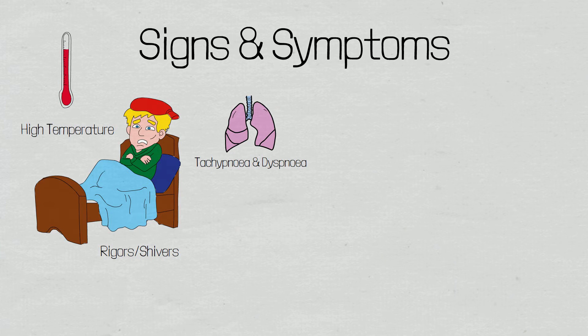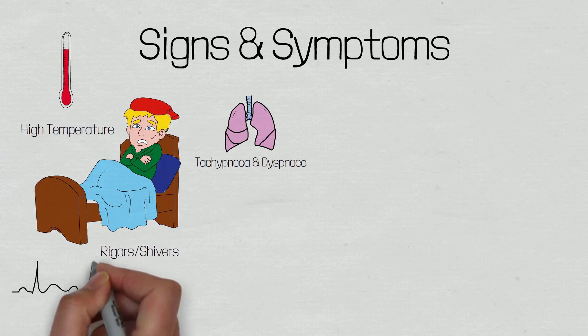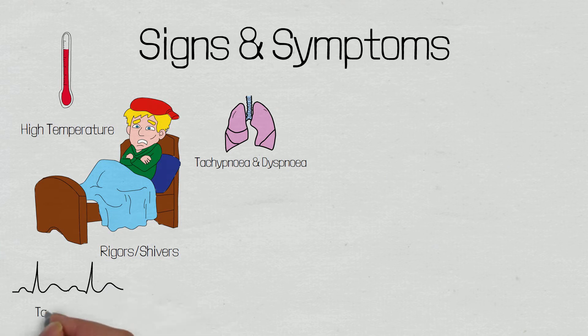The chemoreceptors that sense a change in carbon dioxide levels not only trigger the respiratory centre, but they also trigger the cardiac accelerator centre, leading to an increased heart rate. Heart rate will also be increased by fever, which increases the metabolic demands of the body, so the heart will pump more blood to try and adequately perfuse tissues and organs and remove waste products such as carbon dioxide.